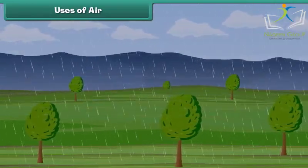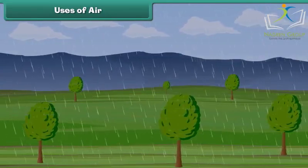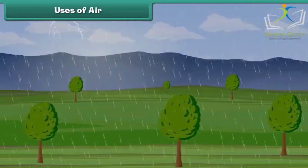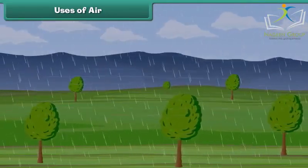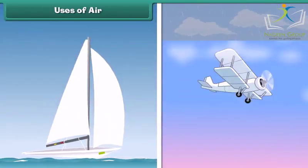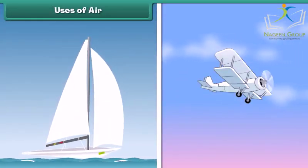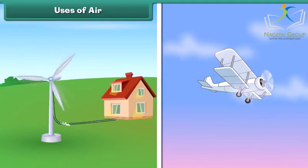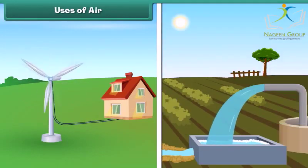Moving air is known as wind. Wind moves clouds and causes rain. Wind helps sailboats and gliders to move. The power of wind is used to generate electricity, and wind power also helps pump water.